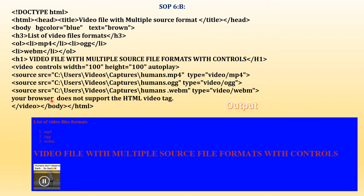Inside the video tag, they said to give a message in case none of the formats are supported: 'Your browser does not support the HTML video tag.' Then for the list of files, I've used an H3 and an ordered list with three items: .mp4, .ogg, and .webm — then close the ordered list. You can see the output: the H1, the list, the video playing at 100 by 100 pixels with autoplay and controls.